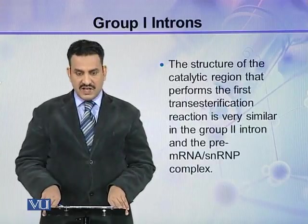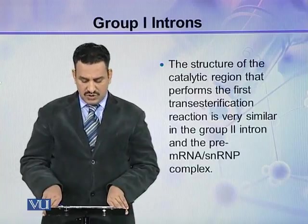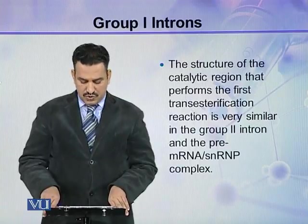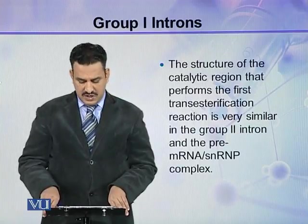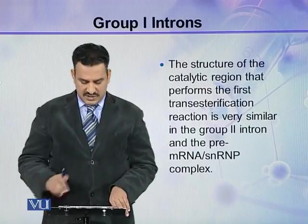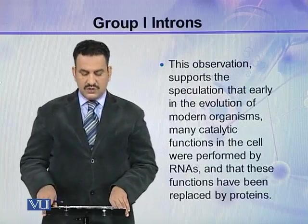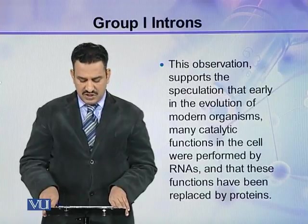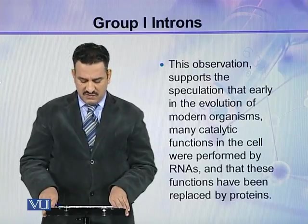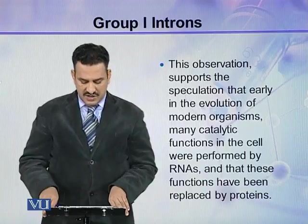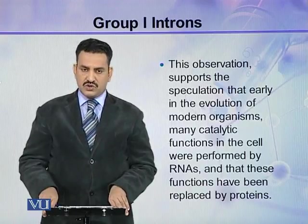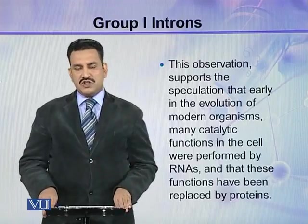The structure of the catalytic region that performs the first transesterification reaction is very similar in Group 2 introns and the pre-mRNA snRNP complex. This observation supports the speculation that early in the evolution of modern organisms many catalytic functions in the cell were performed by RNAs, and that these functions have since been replaced by proteins.